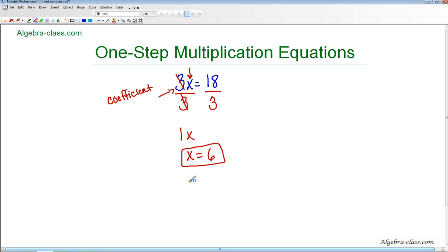And then if you want to check your answer, just simply take that original equation and take out the x and put in a 6. But make sure that you put in that multiplication symbol or parentheses or something to indicate multiplication there. Otherwise, it would say 36 equals 18, which doesn't make sense. So 3 times 6 is 18, which equals 18. That makes sense. So then you know that your answer is correct.